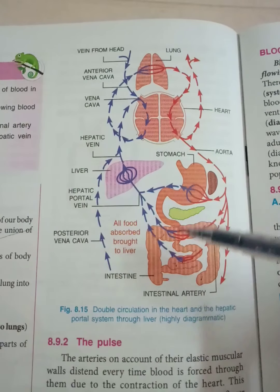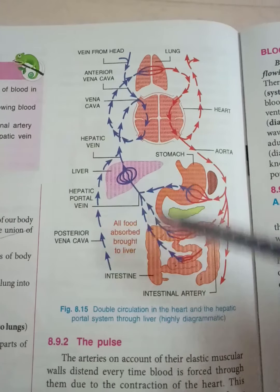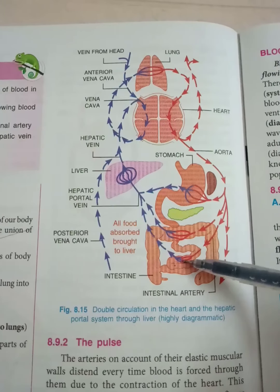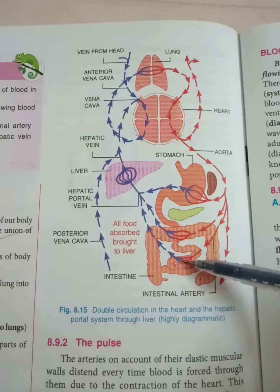The hepatic portal system begins from the capillaries and ends also in the capillaries. It brings blood from the digestive system — especially the small intestine and stomach — into the liver, so that useful substances may be stored there and the blood may be detoxified. The liver detoxifies blood, and then it is transported to the heart for oxygenation.